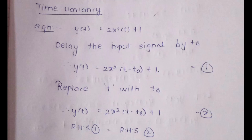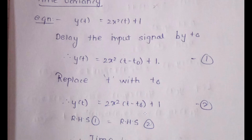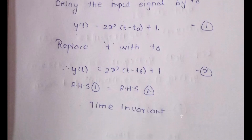For time variance and time invariance: delay the input signal by t₀, then wherever you have t on the right-hand side, replace t with t−t₀. In this example, equations 1 and 2 remain the same after that substitution, hence it is a time invariant system.